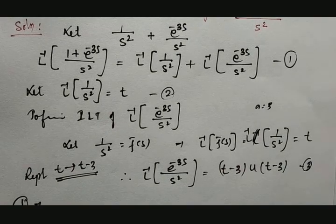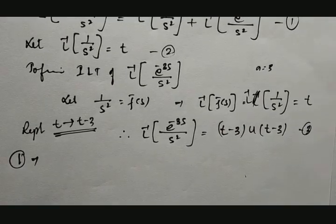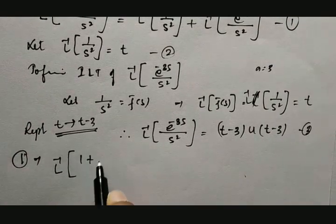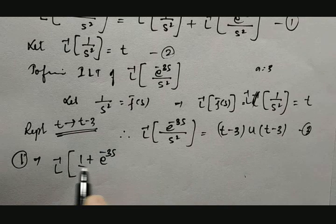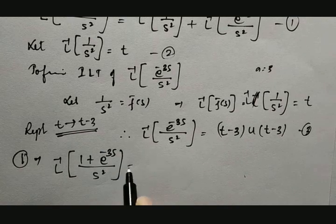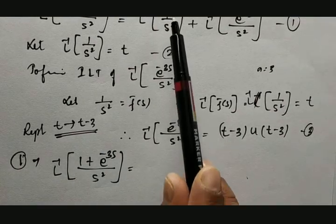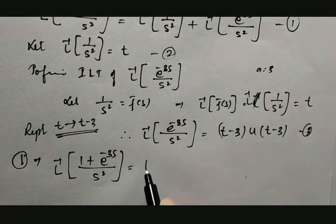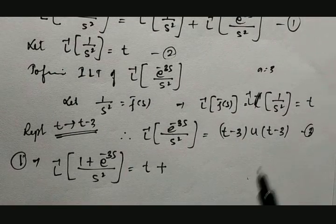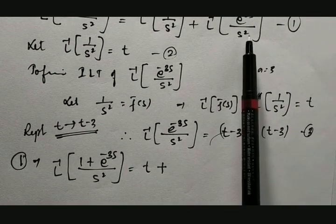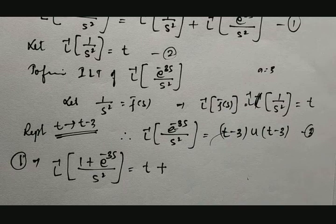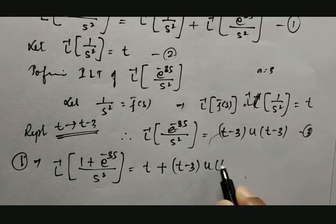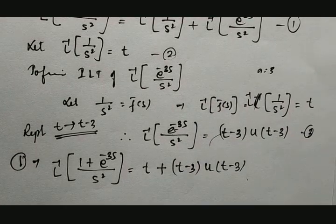Substituting into equation number 1, the inverse Laplace transform of 1 plus e raised to minus 3s divided by s squared equals the inverse Laplace of 1/s² which is t, plus the inverse Laplace of the second term which is t minus 3 into u(t minus 3). This is the solution for the given example.